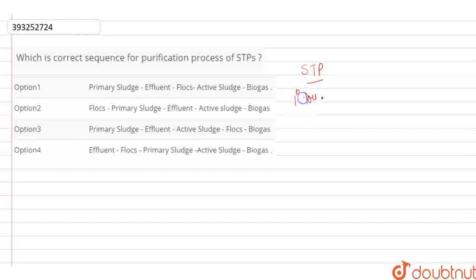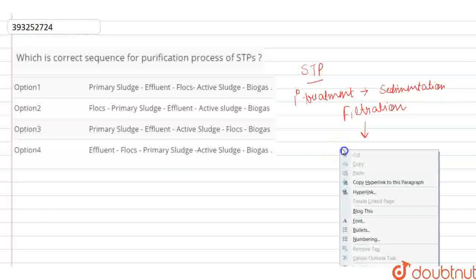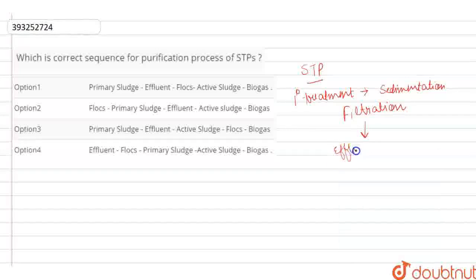Primary treatment. What do we do? Sedimentation and filtration. Sedimentation means very heavy substances settle at the bottom of the system. Then we remove the supernatant, which we call effluent. The effluent is separated, and the sedimentation, we call it primary sludge.